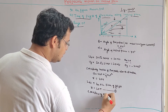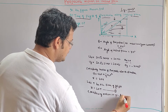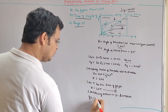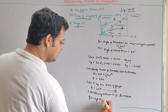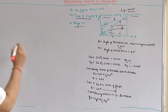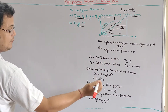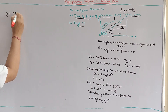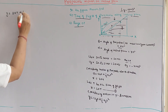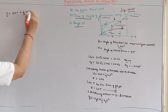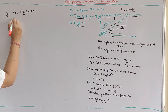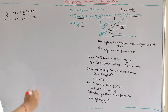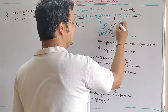Considering motion in the y-direction: y is equal to u_y into t plus half a_y into t squared. Here u_y is also 20 meters per second (since 20 root 2 times sin 45 equals 20), and the acceleration in y is minus 10. So y equals 20t minus 5t squared.